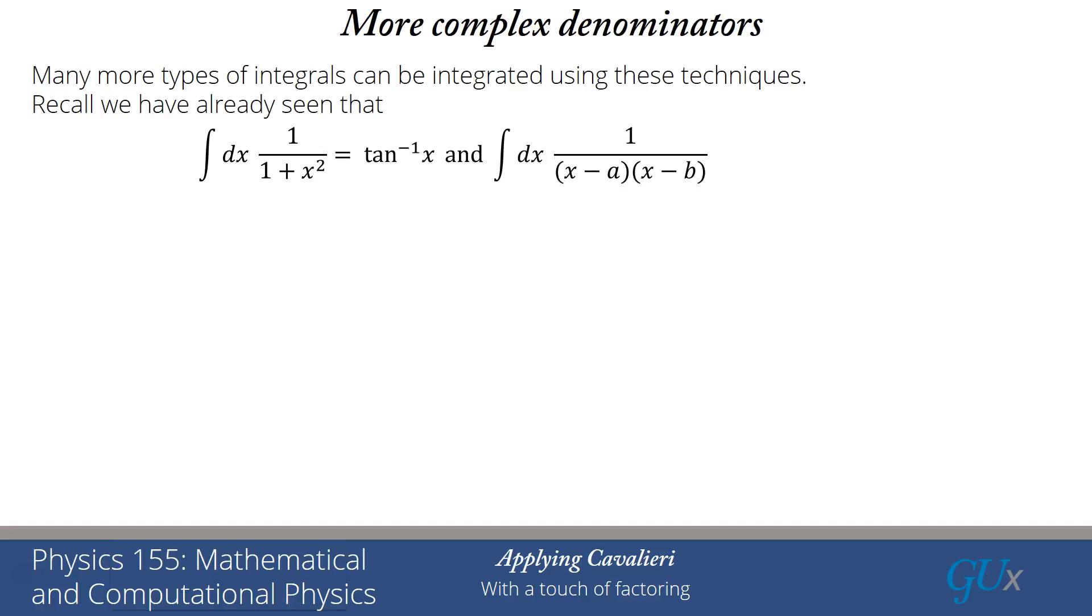What about more complex denominators? There are many other types of integrals that can also be integrated using these techniques. We've already seen that ∫dx/(1 + x²) = arctan(x) because we showed that integrand was the derivative of arctan x. Similarly, if I had 1/[(x - a)(x - b)] where a and b were not equal to each other, I can integrate that as 1/(a - b) ln[(x - a)/(x - b)]. You should be comfortable and familiar with these things. That second integral would come just by doing an expansion in partial fractions.